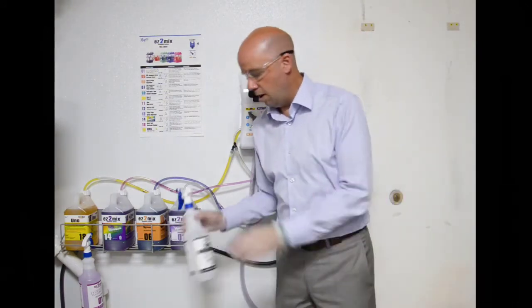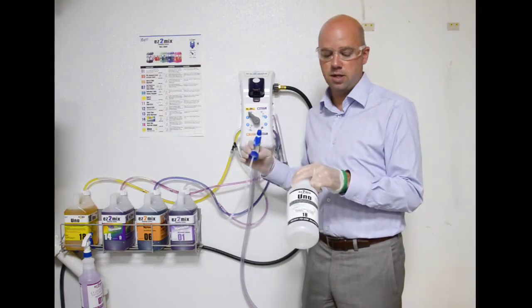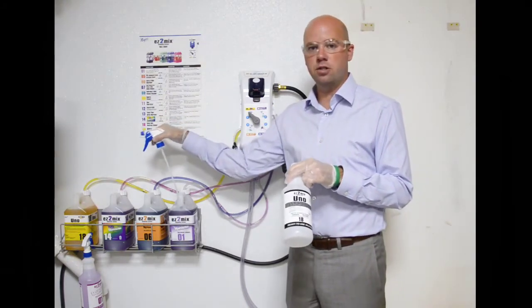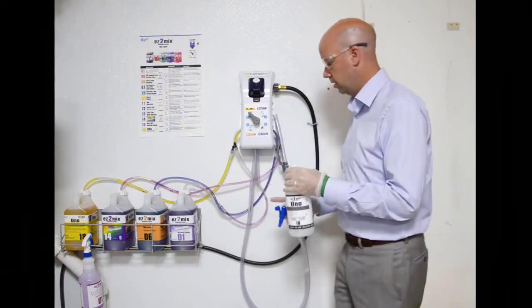Then grab your pre-marked secondary bottle that's already marked with the secondary label for number 18. You can always reference the wall chart to confirm what item you're filling up, in this case number 18 UNO disinfectant cleaner.